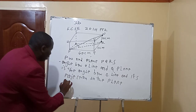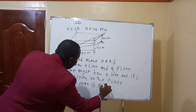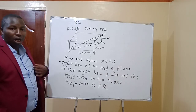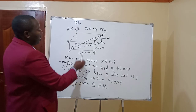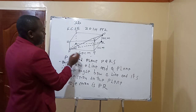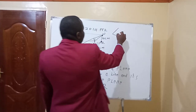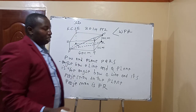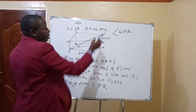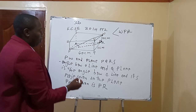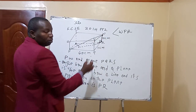The projection of line PW is PR on the plane. So our required angle is the angle between the line and its projection on the plane, which is angle WPR. The right angle is at R — that is, angle PRW is 90 degrees. So we need to find the length of PR, and we already have RW = 10.